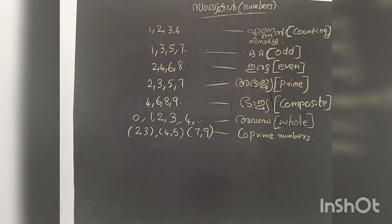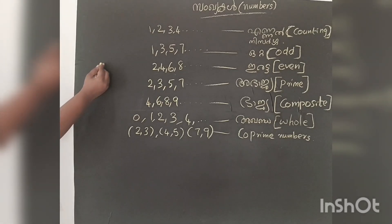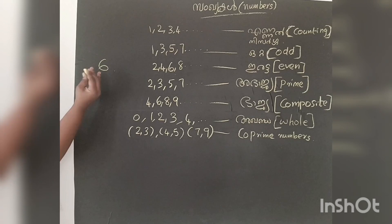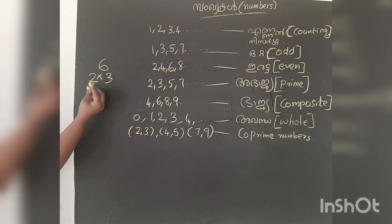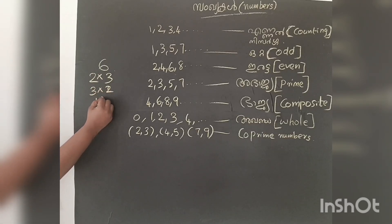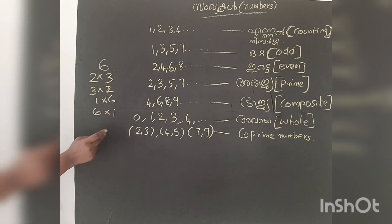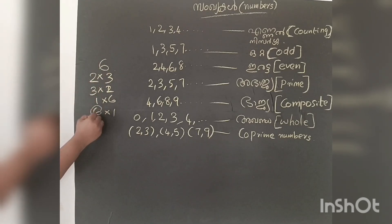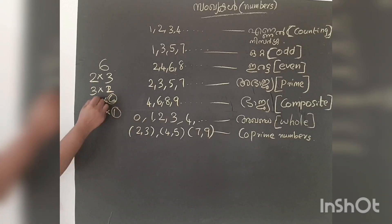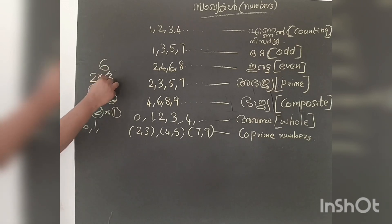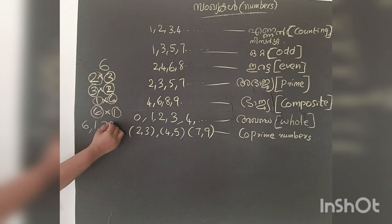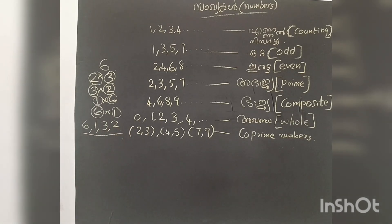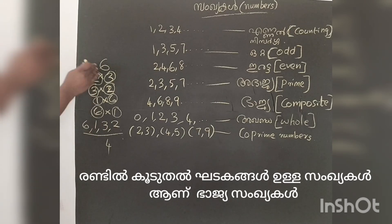If you want to find out the third number, let's look at 6. We can figure out the multiples at this same time: 2 x 3, 3 x 2, 1 x 6, and 6 x 1. Here we are looking at 6 — 6 is 6, 1 is 6, 3 is 6, then 2 is 6.